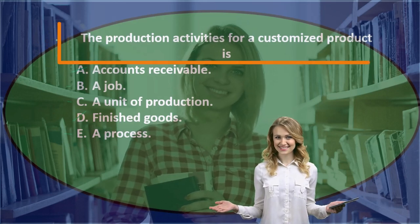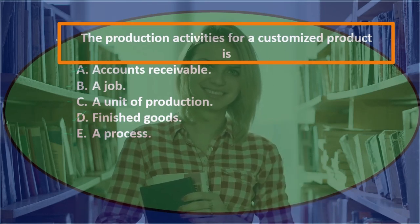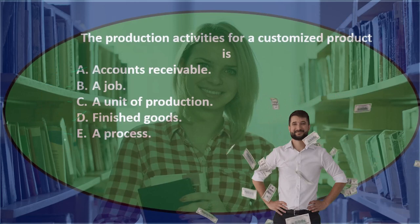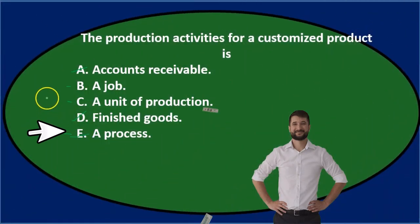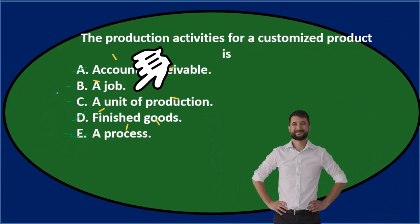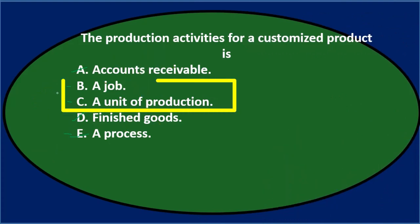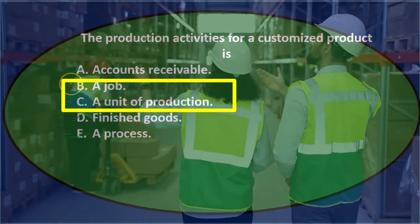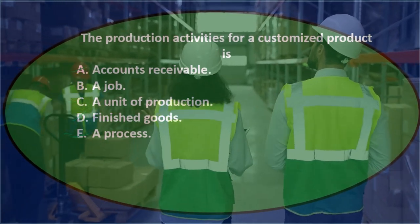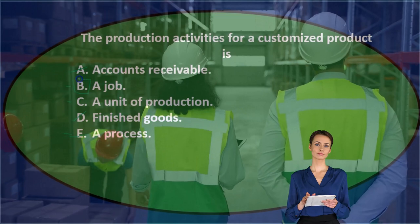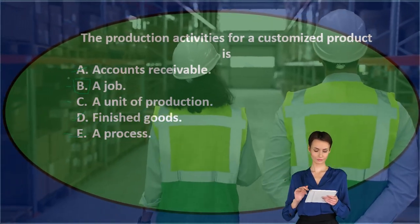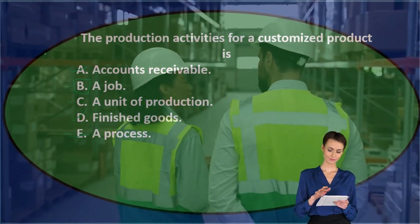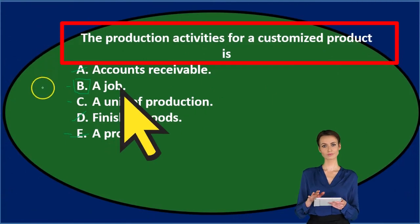When we think of a customized product we're thinking about a job cost system, probably not a process cost system, so we can eliminate E. It's between B, a job, and C, a unit of production — those are kind of the same thing, but a unit of production is more specifically termed a job. Final answer: the production activities for a customized product is B) a job.